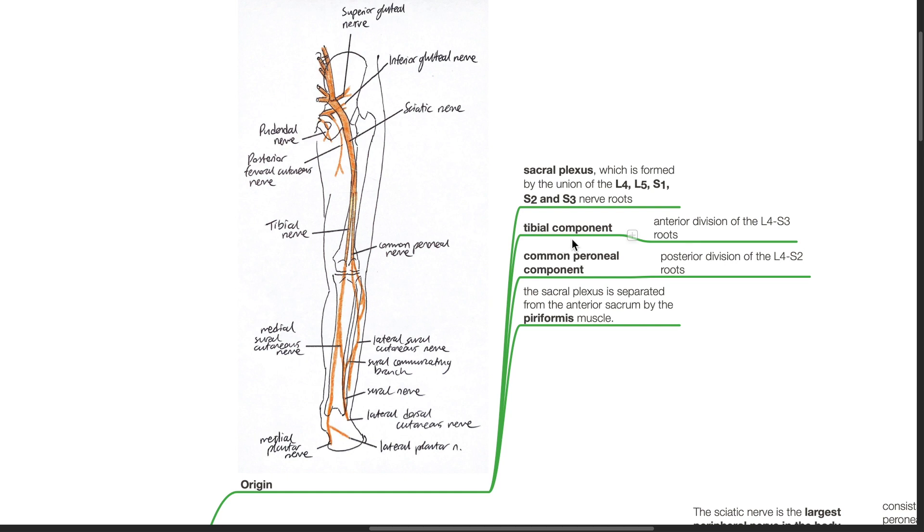The tibial component is formed by the anterior division of the L4 to S3 roots. The common peroneal component formed from the posterior division of the L4 to S2 roots. The sacral plexus is separated from the anterior sacrum by the piriformis muscle.